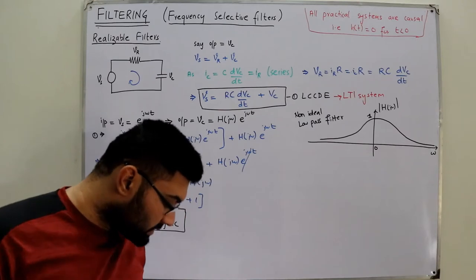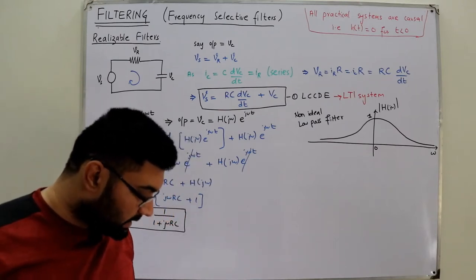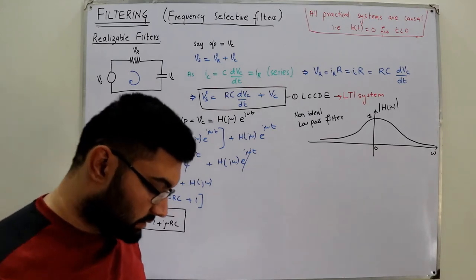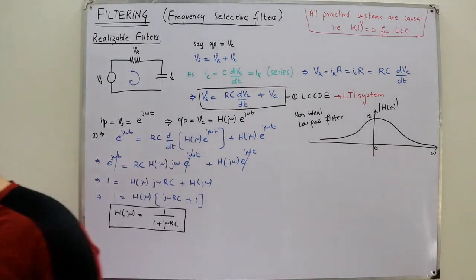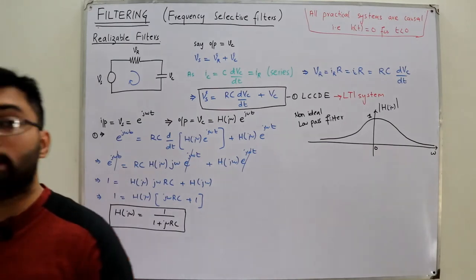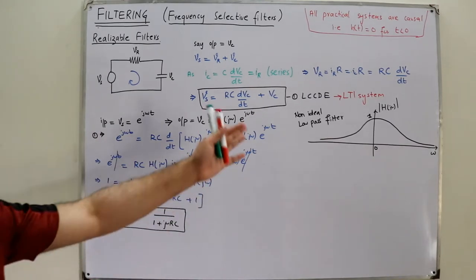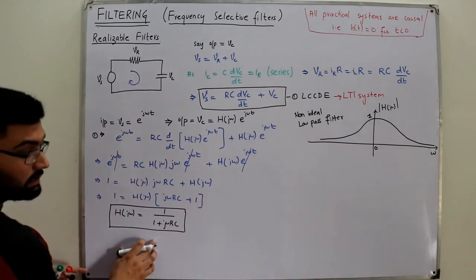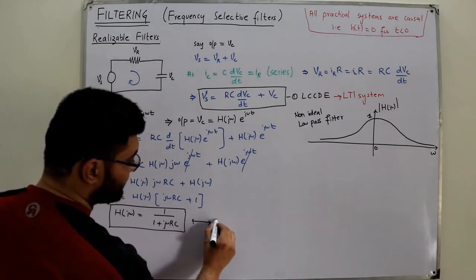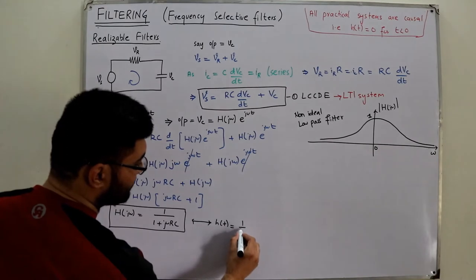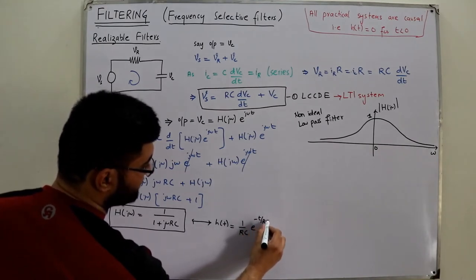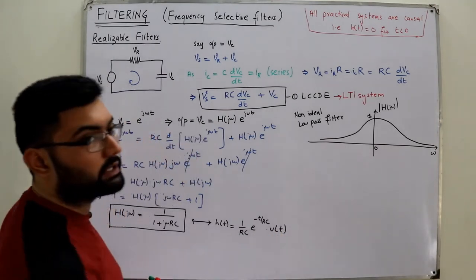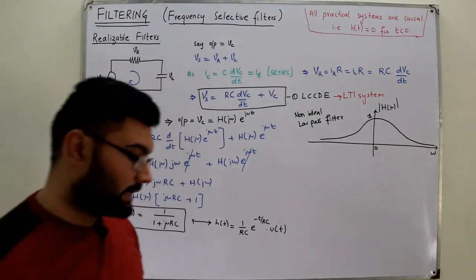Now let's look at the time domain behavior — specifically the impulse response. We need to confirm this is a causal system. The corresponding impulse response is h(t) = (1/RC) · e^(-t/RC) · u(t). The u(t) term confirms causality. Let us prove this.